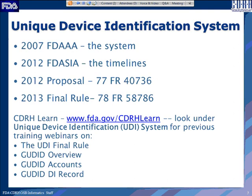The Unique Device Identification system was started in 2007 through the FDA Amendments Act, where Congress gave FDA statutory authority to establish a UDI system. In 2012, the FDA Safety and Innovation Improvement Act provided implementation timelines. A proposed rule came out in 2012 and a final rule was issued in 2013. We strongly recommend visiting the CDRH Learn portion of the FDA website for additional training and webinars on the final rule and an overview of GoodID.